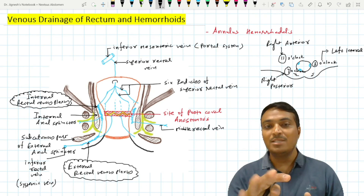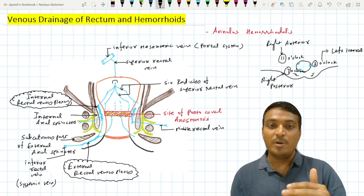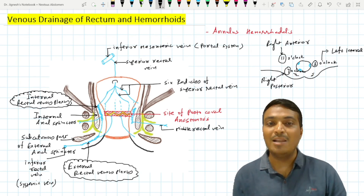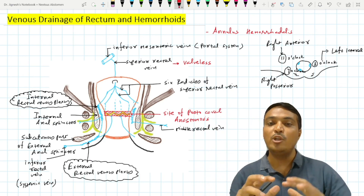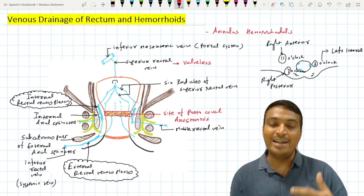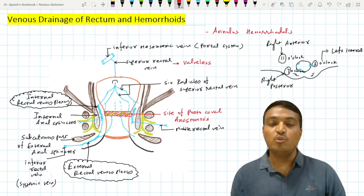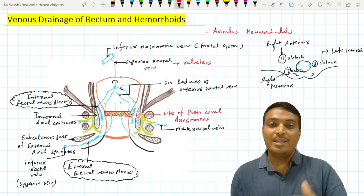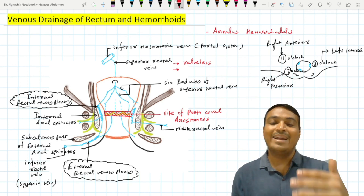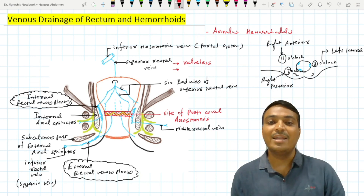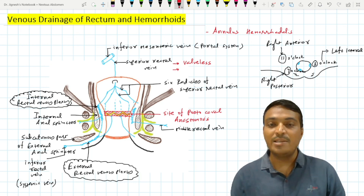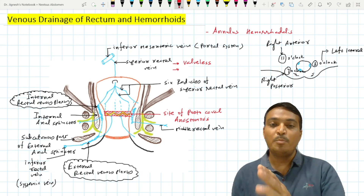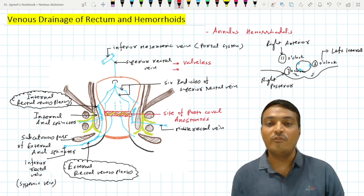The superior rectal vein drains into the inferior mesenteric vein, which is valveless. Therefore, in portal hypertension, backflow of blood leads to engorgement and dilatation of the radicals of the superior rectal vein, causing internal hemorrhoids. Additionally, the superior rectal vein pierces the posterior wall of the rectum about seven centimeters above the anal canal; chronic constipation and straining during defecation can also engorge these radicals, which is another cause of internal hemorrhoids.